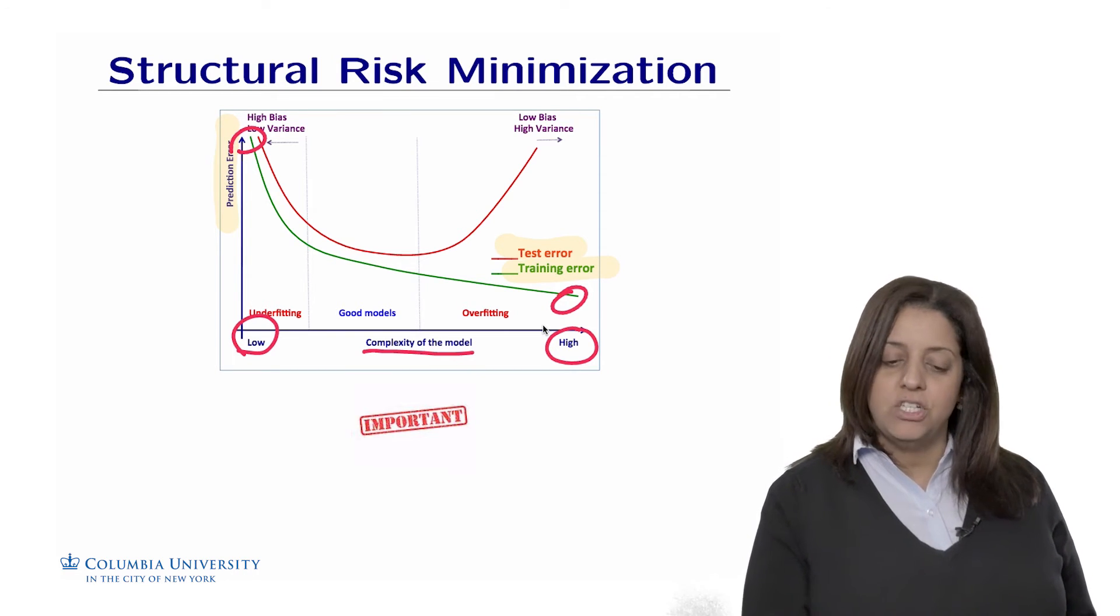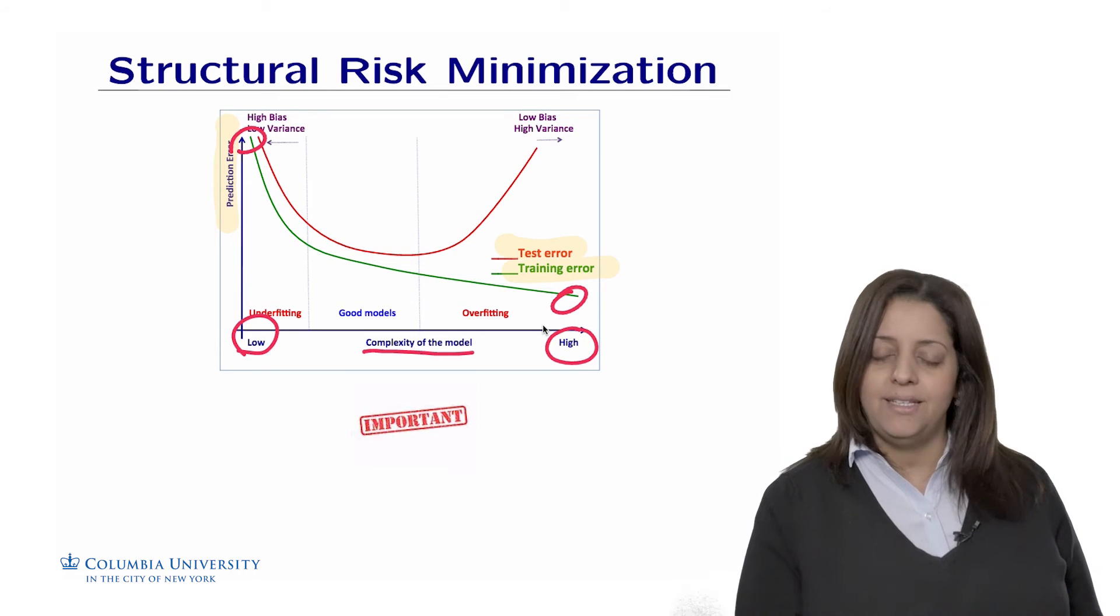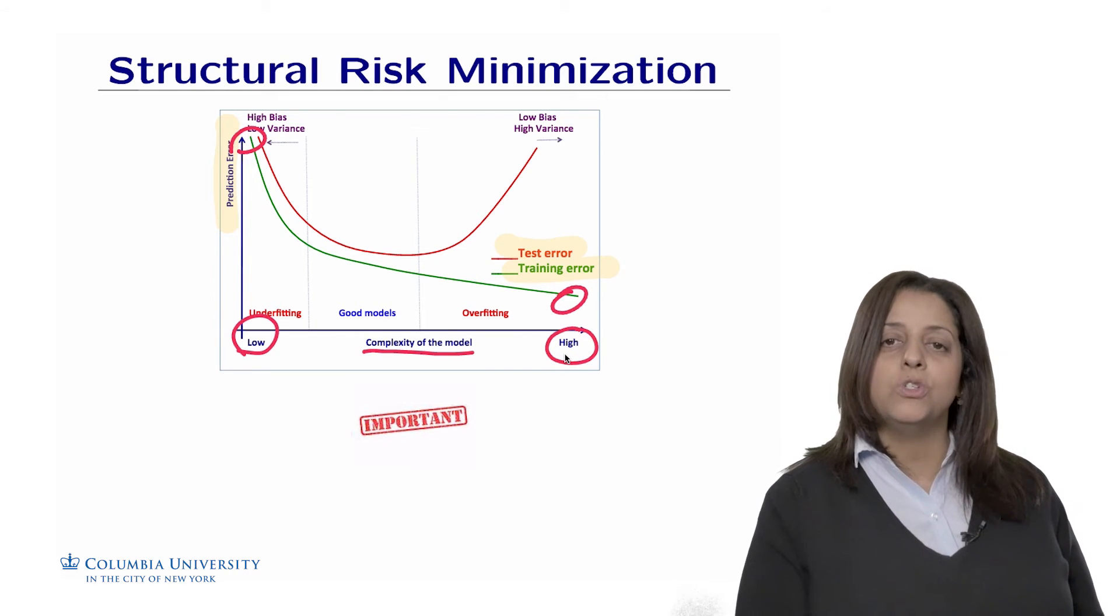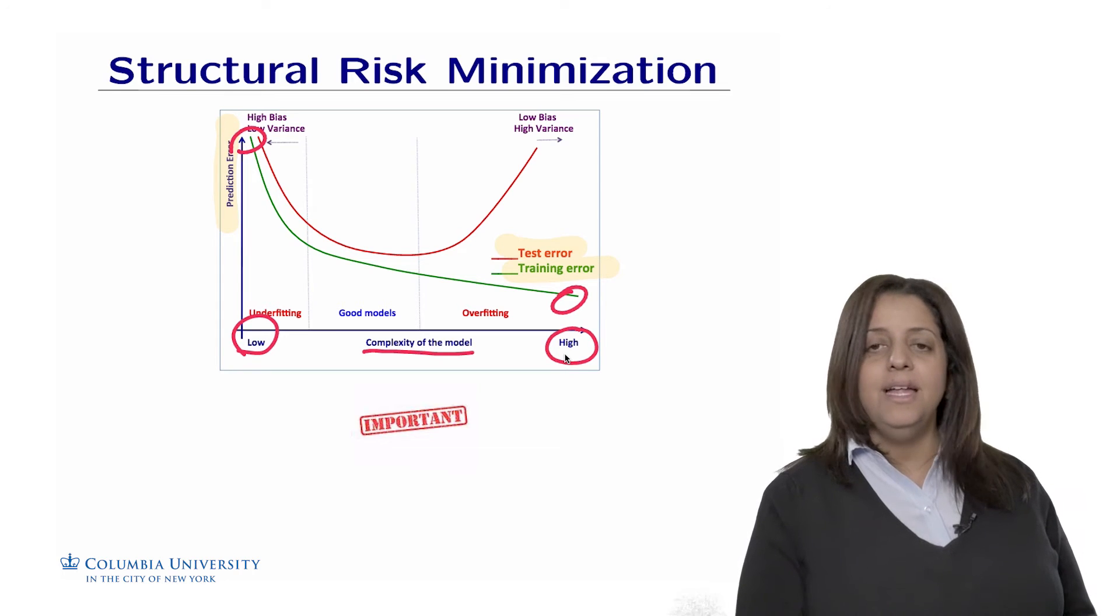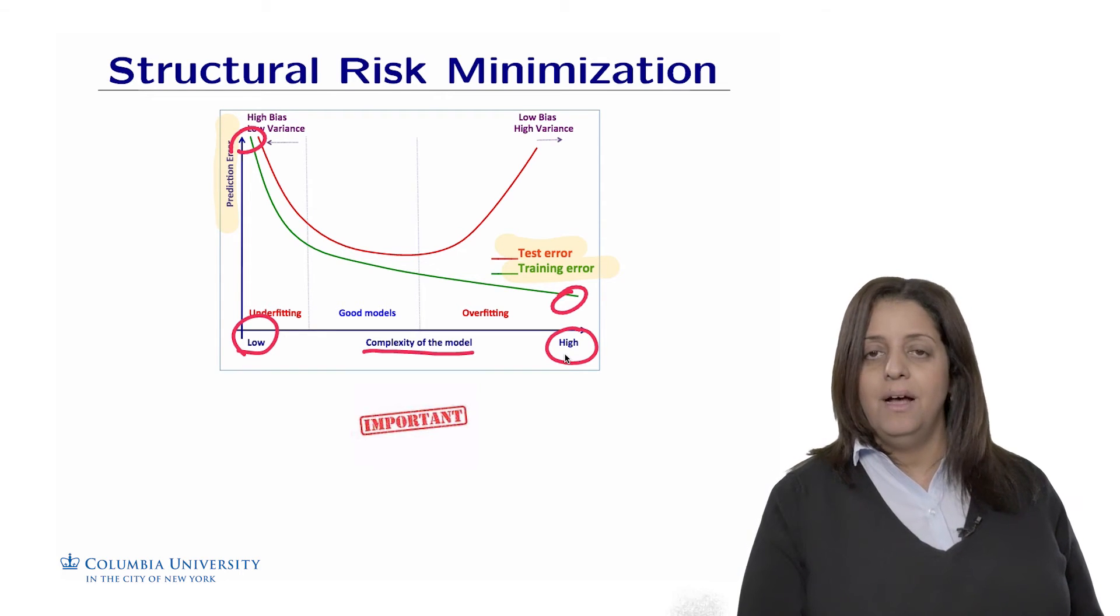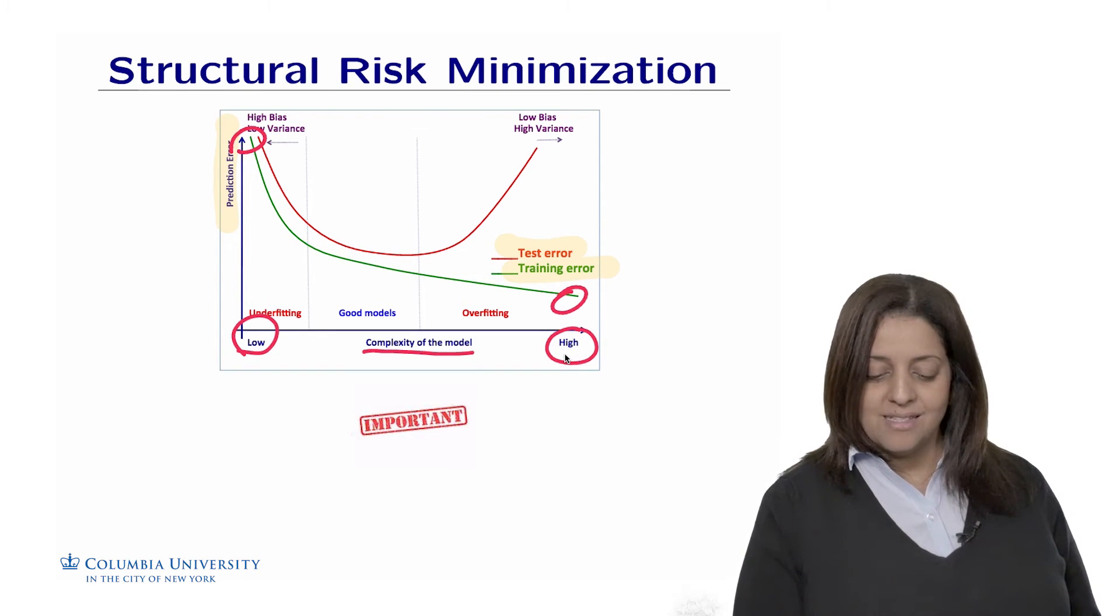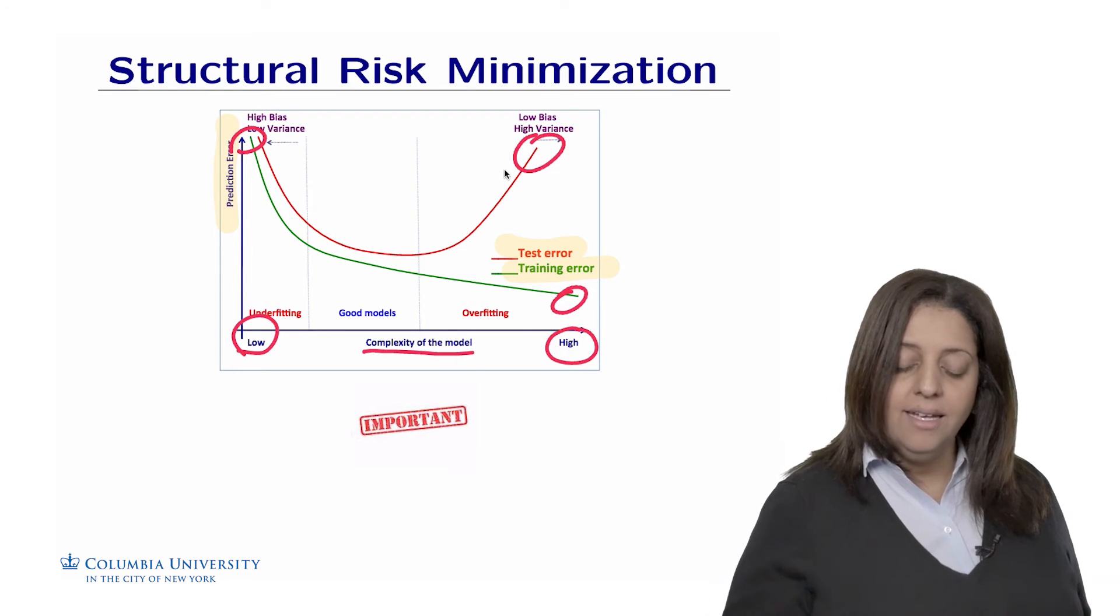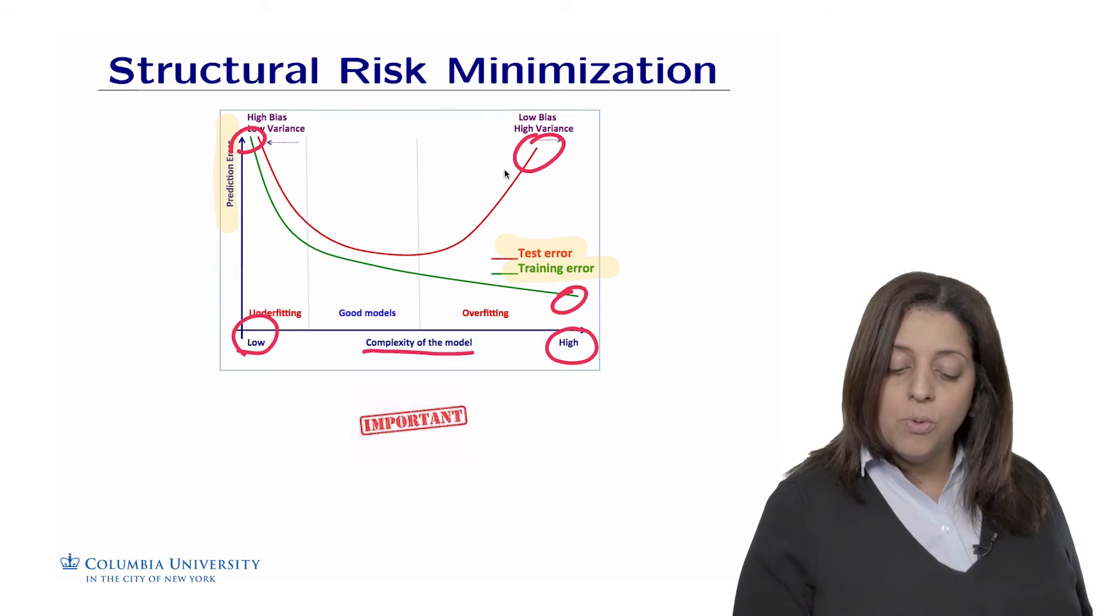However, when we plug this function F into a new dataset of trees and bushes, we're going to do poorly because the complexity of the model was so high that it wouldn't let any other tree make it through the test error. So basically, we would have a high test error and a small training error.